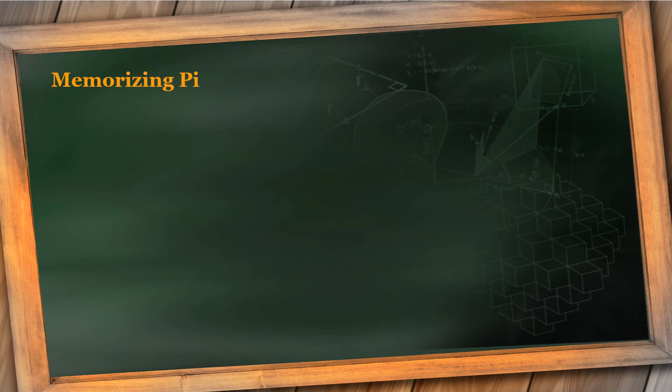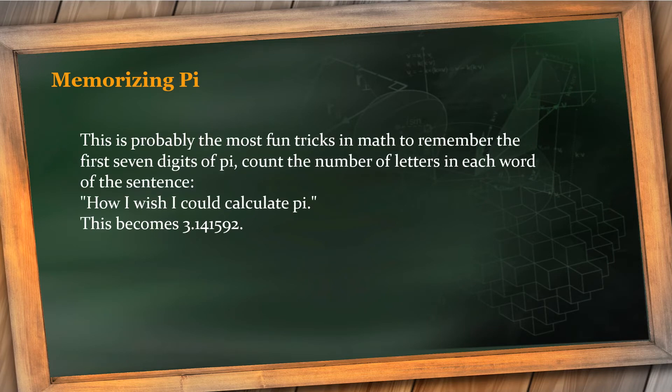Next: memorizing pi, one of the difficult topics in math. This is probably the most fun trick in math. To remember the first seven digits of pi, count the number of letters in each word of the sentence, and the sentence is: How I wish I could calculate pi. Now you will think, what is this? Yes, friends, the word 'how' has how many letters? Three letters, so the first digit is 3 point. 'I' is one word, so 1. 'Wish' has four letters, so 4 is the next number.